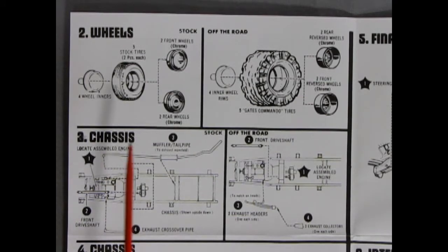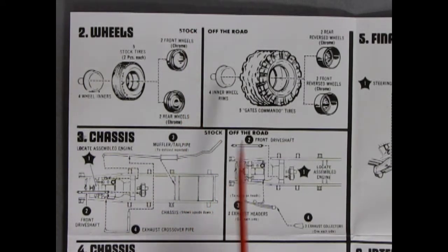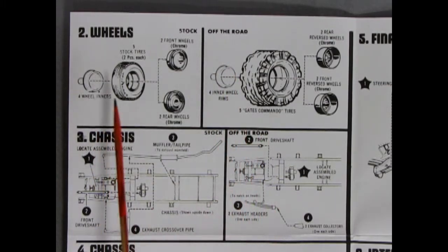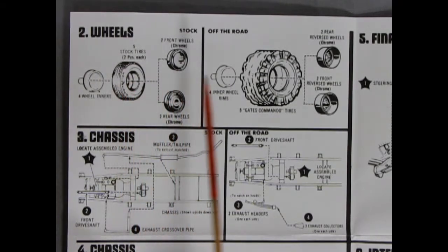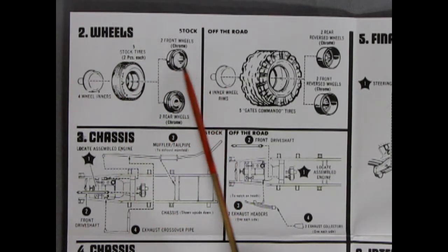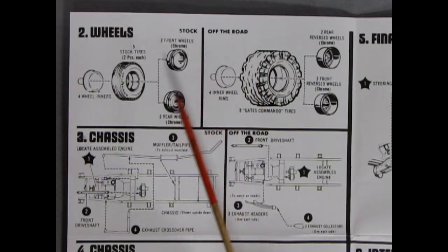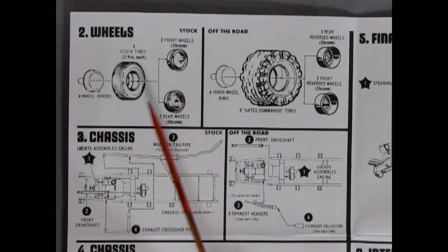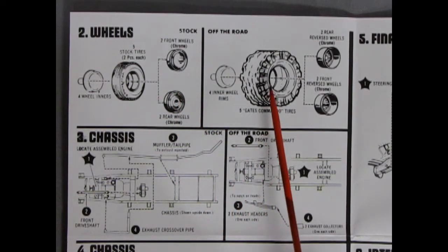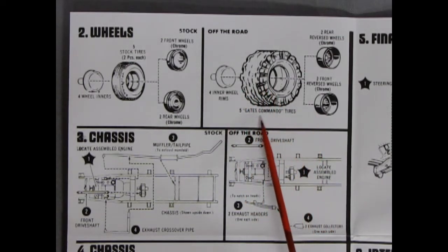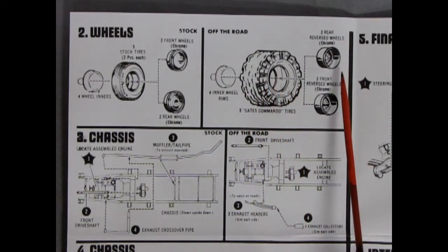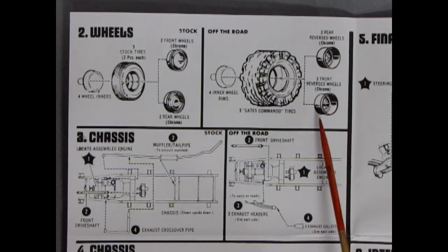Now we can take a look at two different panels here as we check out our wheels and our chassis. So this dividing line shows the stock side on this side and the off the road on this side. Anyway, there's our four wheel inners. We get five stock tires, so I assume one is going to be a spare. We've got two front wheels, it looks like a full cap on here, and then the two rear wheels which the hubcap seems to be sunken in at the back. So that might have been special for the four wheel drive mounts. And then our off the road, we have our four inner wheels. We have these Gates Commando tires. You can put on your reversed wheels here in the front, and then some for the back.